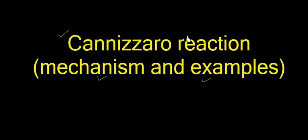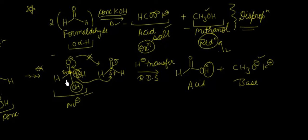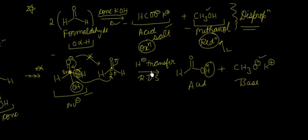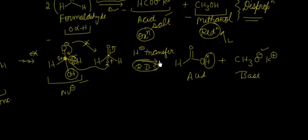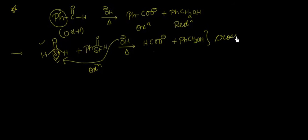Now let us recall what we have learned. Cannizzaro reaction बहुत important reaction है। इस reaction में हम एक aldehyde लेते हैं जिसमें कोई alpha-H available नहीं होना चाहिए, strong basic medium में, at high temperature reaction होती है — disproportionation — जिसके अंदर एक unit oxidize होके acid का salt बनाती है और दूसरी unit alcohol बनाती है। यह hydride transfer जो हुआ, वो rate determining step था। इसके बाद हमने cross Cannizzaro भी किया — cross Cannizzaro का मतलब होता है जब दोनों molecules जो Cannizzaro करते हैं they are different। So this was Cannizzaro reaction students.